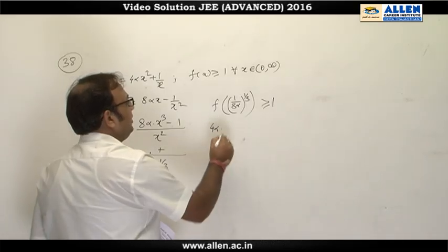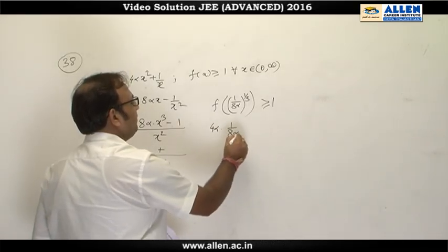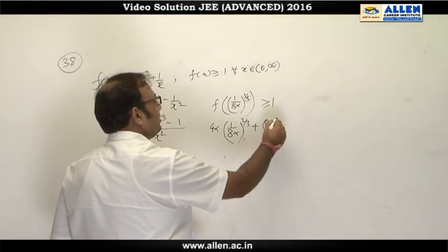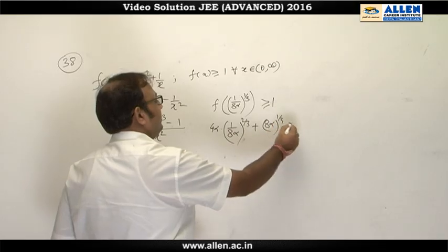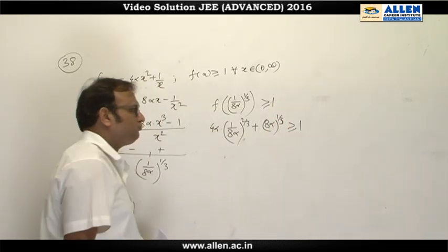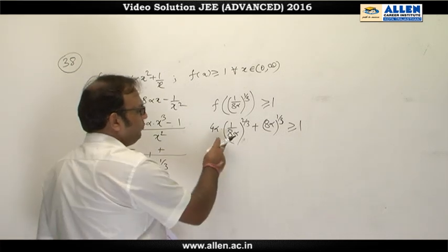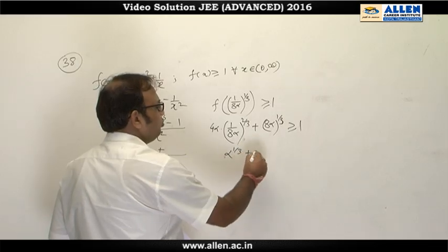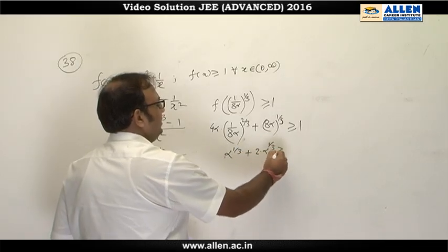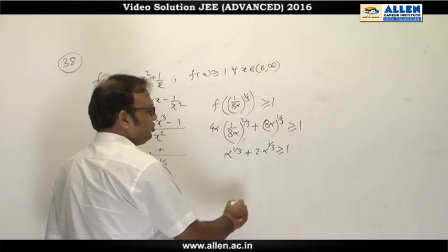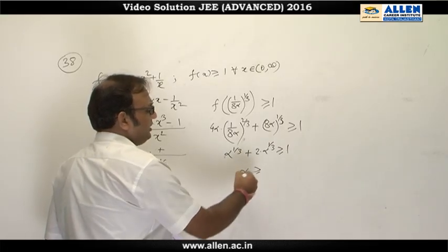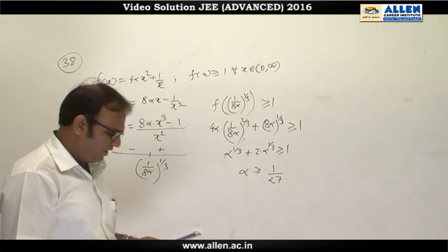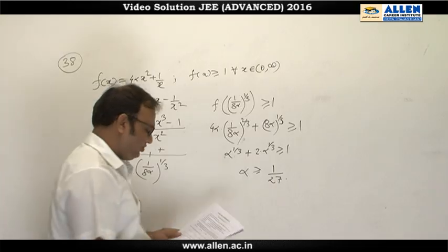According to the given condition, f((1/8α)^(1/3)) ≥ 1. Substituting, we get 4α · (1/8α)^(2/3) + (8α)^(1/3) ≥ 1. The 4 cancels and we get α^(1/3) + 2α^(1/3) ≥ 1, so 3α^(1/3) ≥ 1, giving α ≥ 1/27. The least value of α is 1/27, and therefore option C is correct.